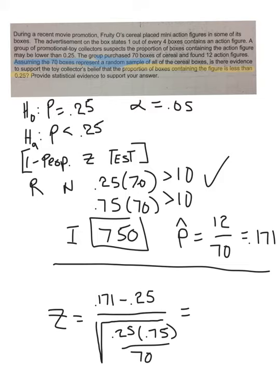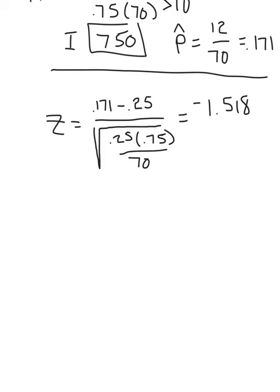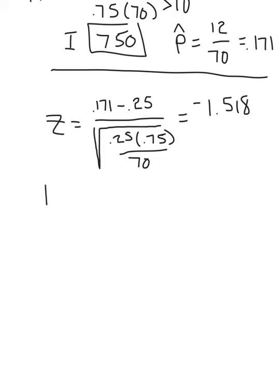So I get a z score of negative 1.518. And in this case, I don't have to subtract it from one. But anyway, in the calculator, it tells me that the p-value is equal to 0.064.